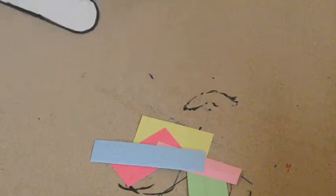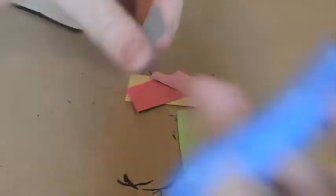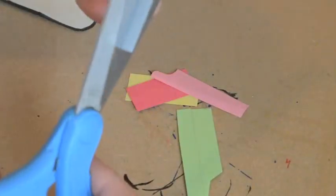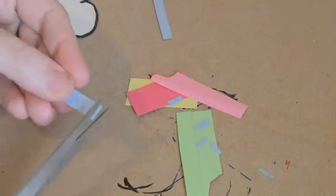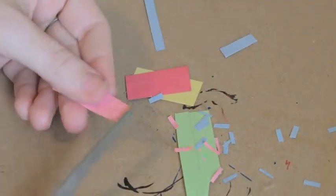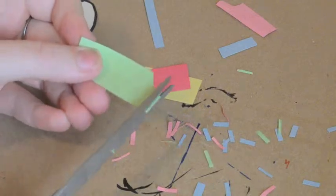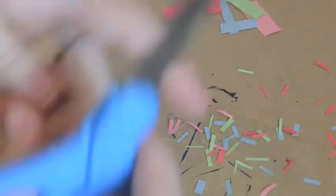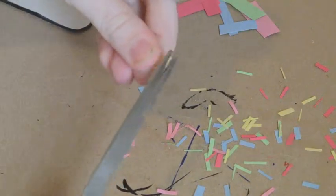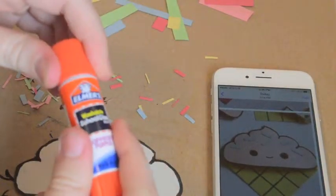Next, taking some scrap pieces of colorful paper, I'm going to cut them out in little tiny strips to act as sprinkles. Now just go ahead and take out your glue and glue on your sprinkles.